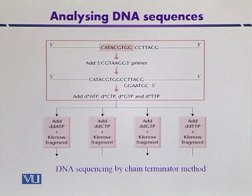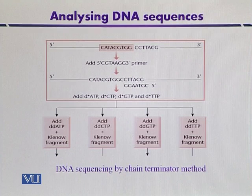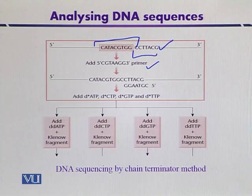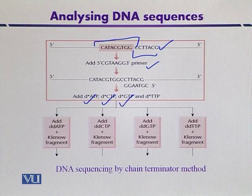This is the basic procedure of the chain termination method. Suppose we have a DNA fragment that we want to sequence, and we have a primer complementary to its 3' end. When the primer is added, four different reaction mixtures are carried out — for adenine, cytosine, guanine, or thymine — with all four dNTPs and their respective dideoxynucleotides added.